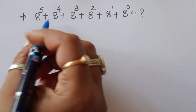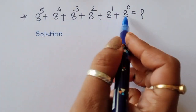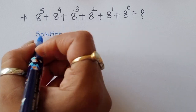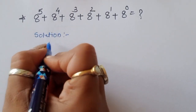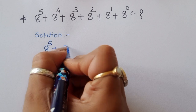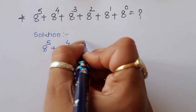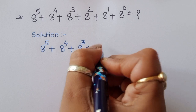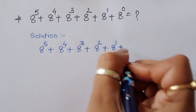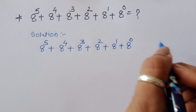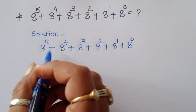You can use any number in this type of question — any number here — and the method is the same. So, solution: 8 power 5 plus 8 power 4 plus 8 power 3 plus 8 power 2 plus 8 power 1 plus 8 power 0. This is given.